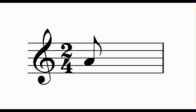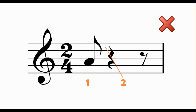Rule 4 tells us to always complete our beat. If I were to write a single quaver in a 2/4 bar I would be left with one and a half beats of rest. I would need to add a crotchet rest and a quaver rest to make sure I had the correct number of beats in the bar, but now there is a problem because beat 1 starts on the quaver, which is fine, but beat 2 starts halfway through the crotchet rest.